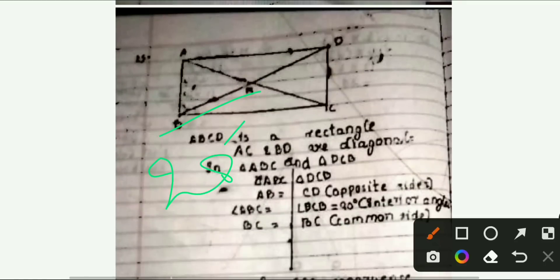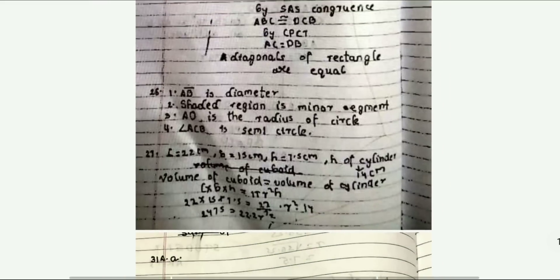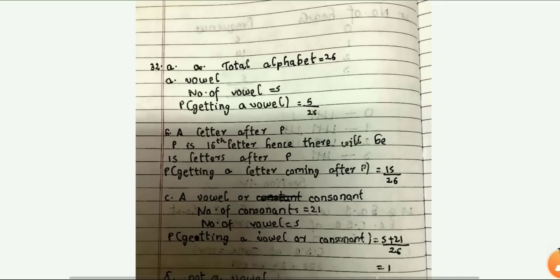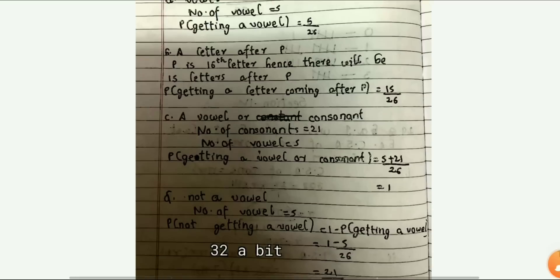All questions you can see, then question 25 — this is question 25. Then question 26, question 27, and then question 32. Last, question 30 — the big question — this is the 30 big question.